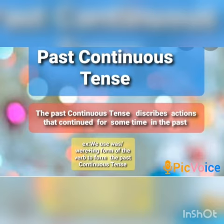Now let us see past continuous tense. Past continuous tense describes actions that continued for some time in the past. We use was or were plus the ing form of the verb. For example, Bablu was cycling all morning yesterday. I was playing with my friends. They were already swimming when I reached the pool.